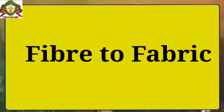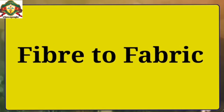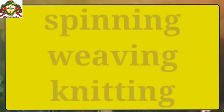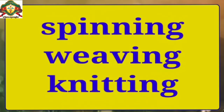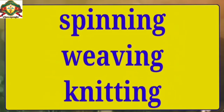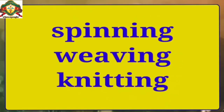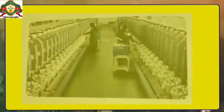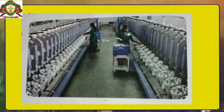Do you know about fiber to fabric – how fabric is made from fiber? The steps are spinning, weaving, and knitting. Spinning is a process in which fiber strands are twisted in a machine to form yarn. Nowadays, the spinning process is done through machines in factories.